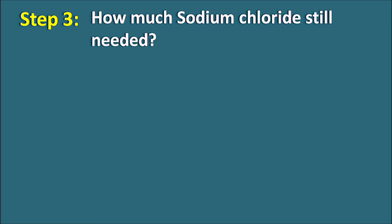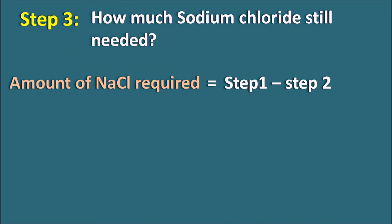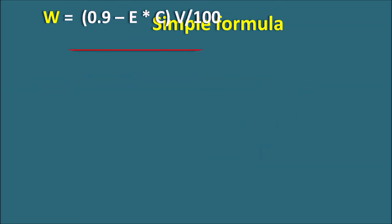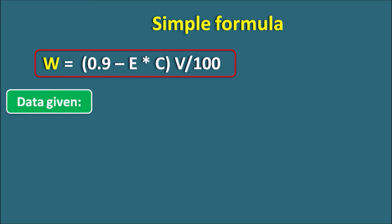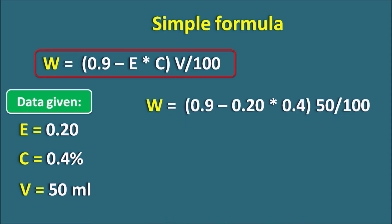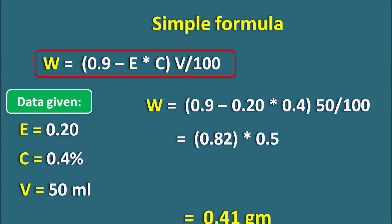Step 3: Sodium Chloride required = Step 1 − Step 2 = 0.45 − 0.04 = 0.41 grams. Applying the simple formula: W = (0.9 − 0.2 × 0.4) × 50/100 = 0.82 × 0.5 = 0.41 grams. We get the exact same value, confirming the formula works correctly.